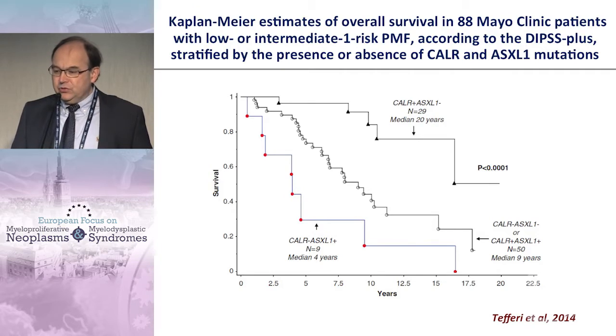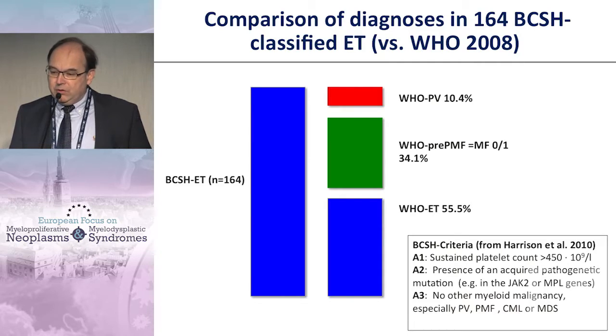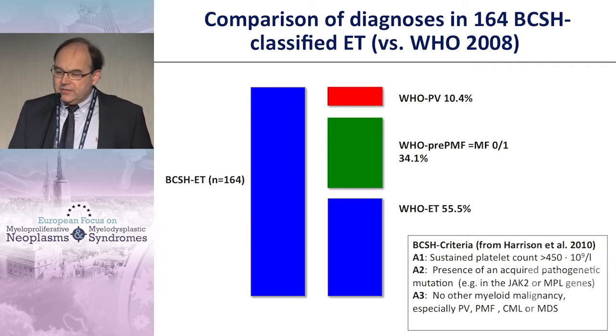It was also extremely important to show that CALR mutation, when present, confers a very good prognosis. The subgroup that is ASXL1-negative has the best prognosis. In agreement with Professor Vannucchi, patients who are ASXL1-positive had worse prognosis when they did not have the CALR mutation. This analysis was done in low- and intermediate-risk PMF patients, so ASXL1 may add prognostic information in the good-risk group.